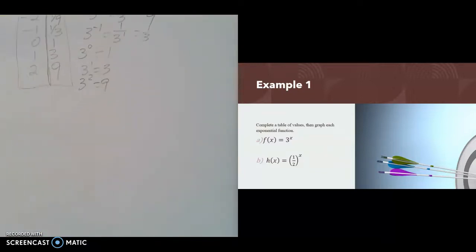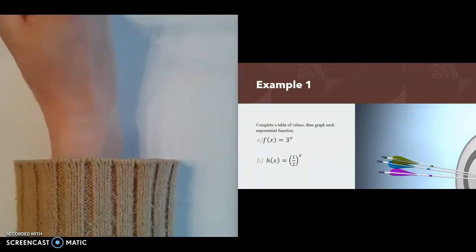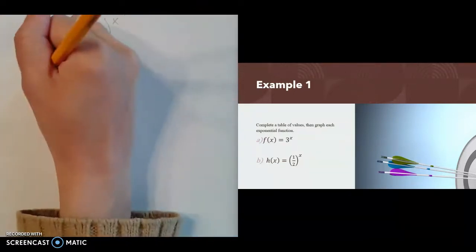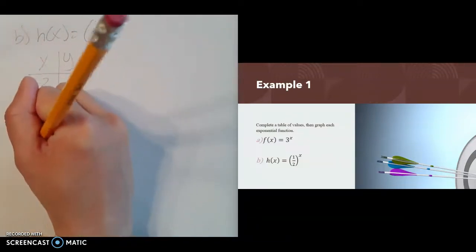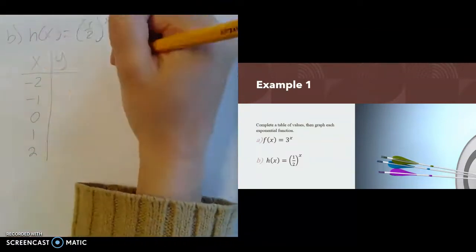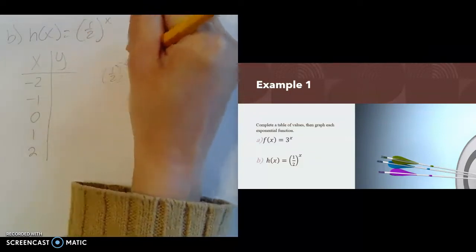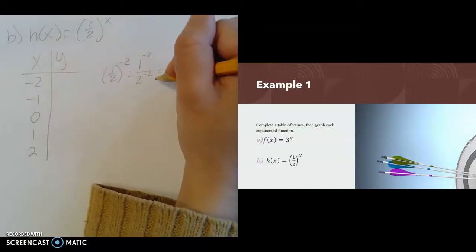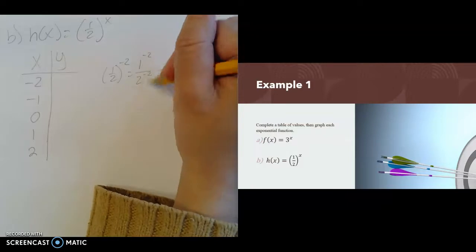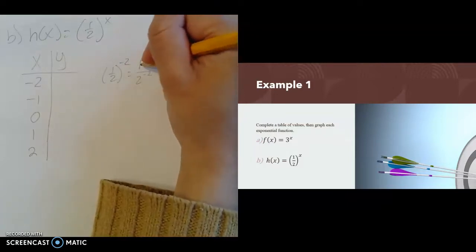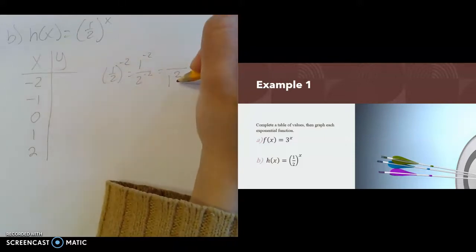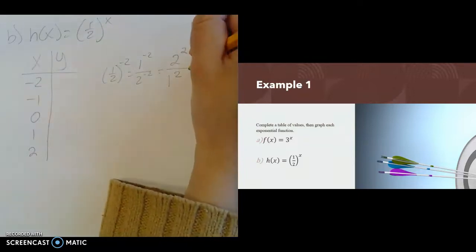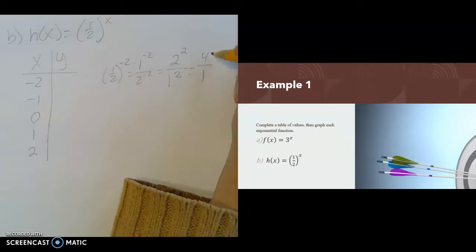The next function is h of x equals 1 half to the x. I'll make a table of values for x equals negative 2, negative 1, 0, 1, and 2. When x is negative 2, we have 1 half raised to the negative second power — that's 1 to the negative second over 2 to the negative second. Moving the negative exponents to their preferred positions: 2 squared is 4, 1 squared is 1, so 4 divided by 1 is 4.